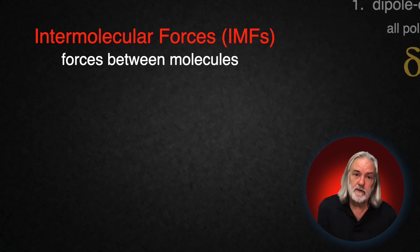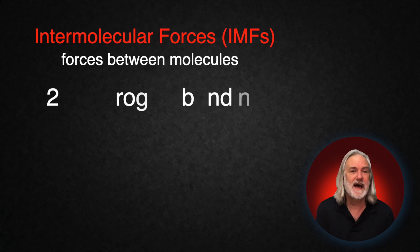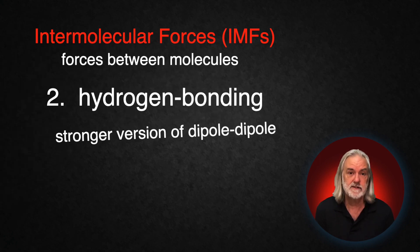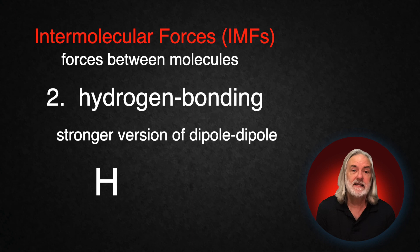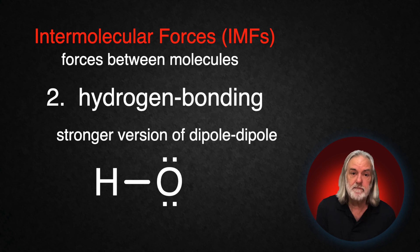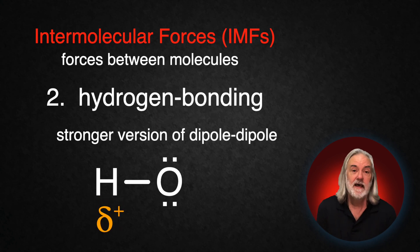The second one is kind of a special case of dipole-dipole interaction called hydrogen bonding. It's a special case because it just happens to be a very strong case. When you have hydrogen attached to an oxygen through a covalent bond, the hydrogen ends up being partially positive but in a very special way — meaning it is much more partially positive than your normal partial positive. So this attracts others.